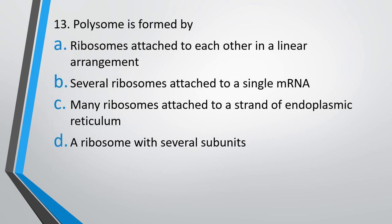Question number 13. Polysomes are formed by: ribosomes attached to each other in a linear arrangement, several ribosomes attached to a single mRNA, many ribosomes attached to a strand of endoplasmic reticulum, or a ribosome with several subunits. Correct answer is option B — several ribosomes attached to a single mRNA.